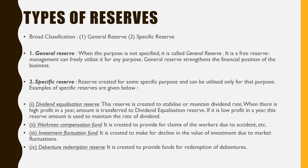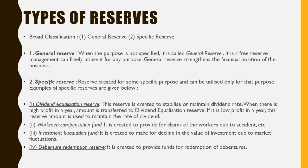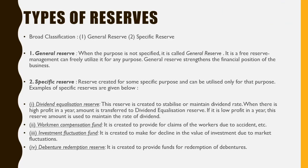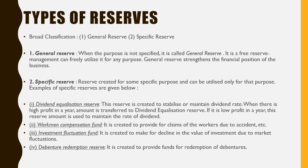The first specific reserve is the dividend equalization reserve. The intention of this reserve is to stabilize or maintain the dividend rate. When there is high profit in a particular year, that amount is transferred to this reserve. When there is low profit in a year, the reserve amount is used to maintain the rate of dividend. The second is the workman compensation fund, which is used to meet certain claims of workers due to accidents or other problems — this reserve is used to pay a certain amount to the workers.